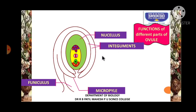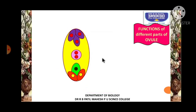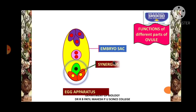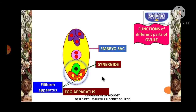Now let us understand the functions of the different parts of the ovule. The embryo sac is a cavity and is the female gametophyte. The female gametophyte contains an egg apparatus wherein we see synergids. Synergids are made up of elongated thread-like structures called filiform apparatus. The function of the filiform apparatus is to guide the pollen tube carrying two male gametes towards the egg.